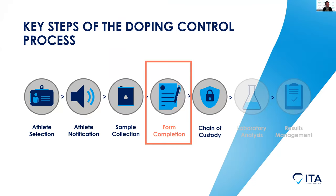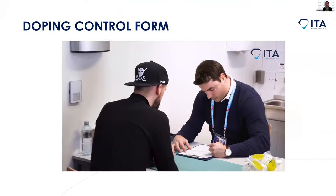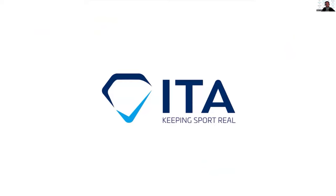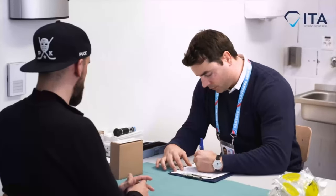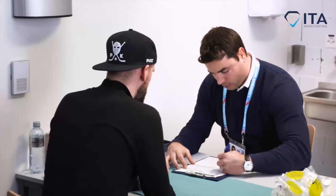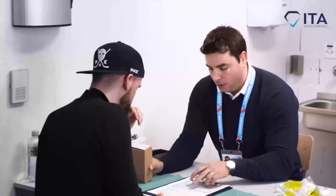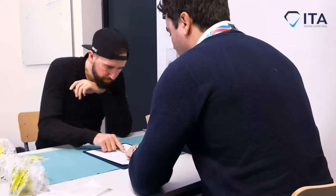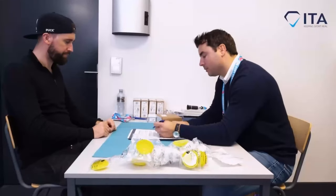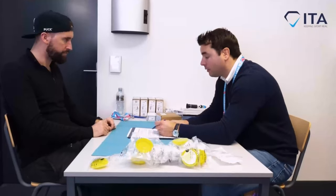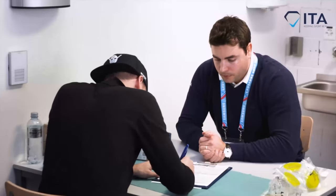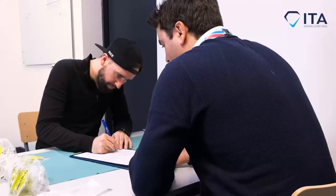We have now reached step four of the process. Let's take a quick look at a video of how the doping control form works. In the video, the DCO says: 'No additional samples required, so we'll just cross out all other urine boxes. Let's check the number again. The next step is medication and supplements for the last seven days — if you have any, please state them here.'